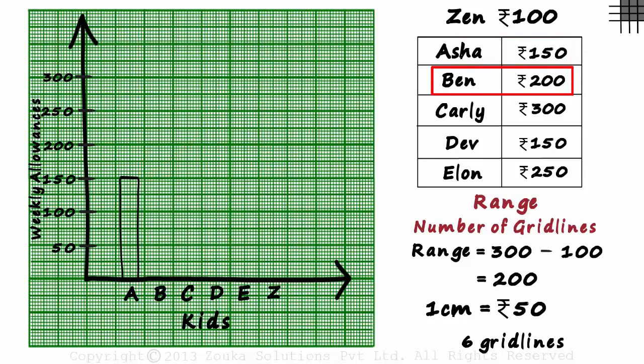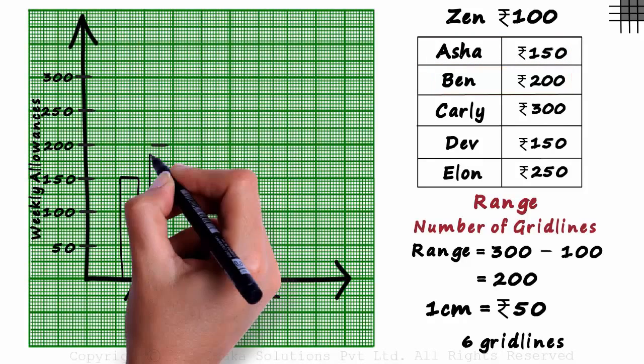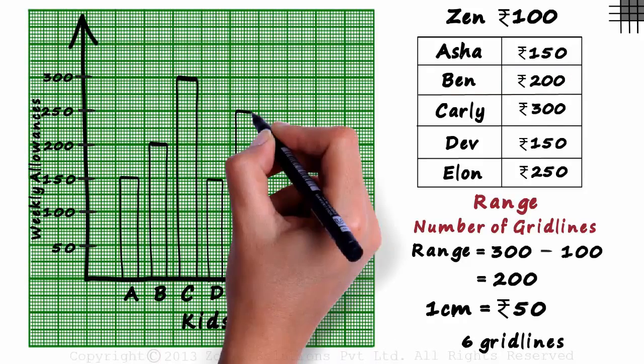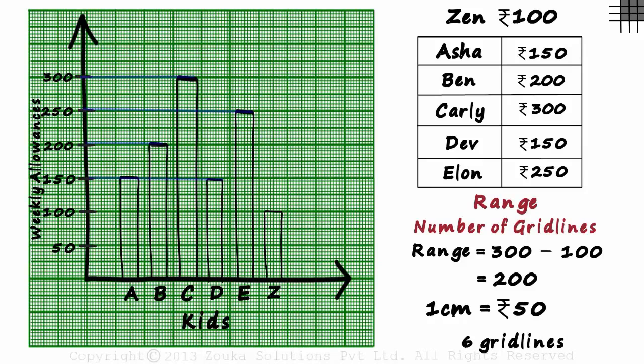To represent Ben's weekly allowance, we draw a bar up to 200. Like this. And we continue to draw bars for other data points as well. And then Zen tells his dad that everybody's weekly allowance is more than what he's given every week.